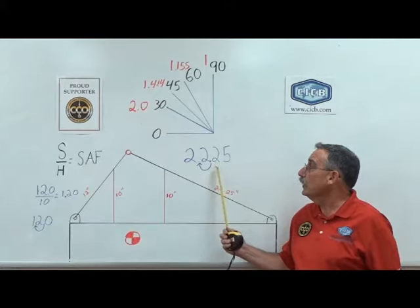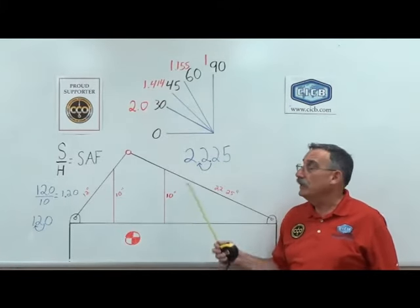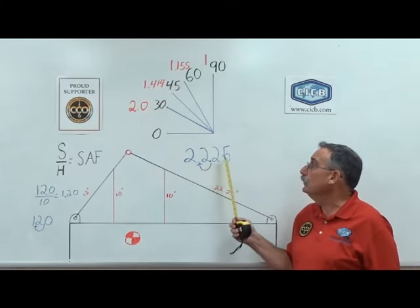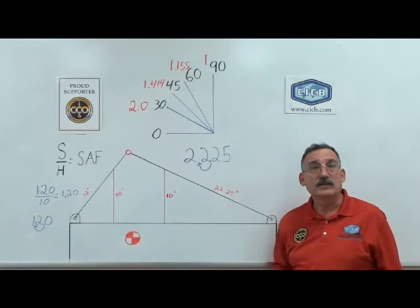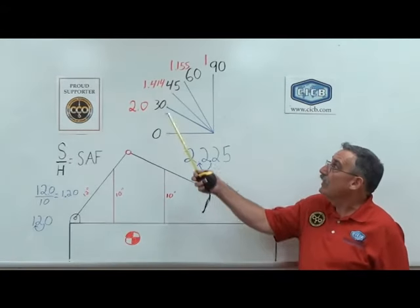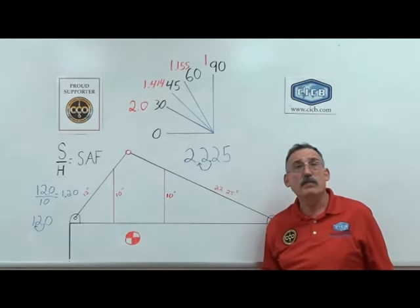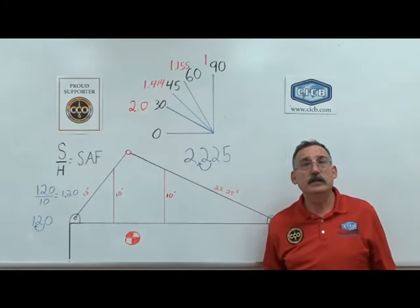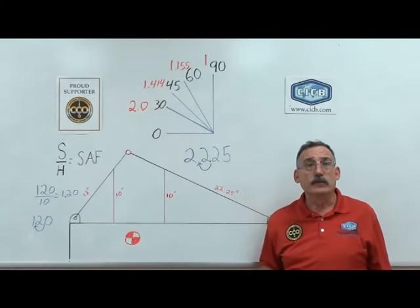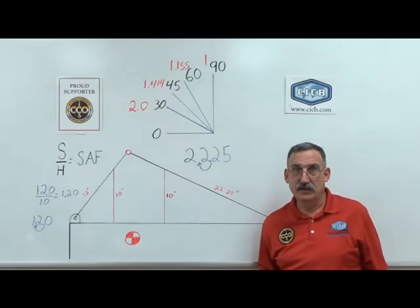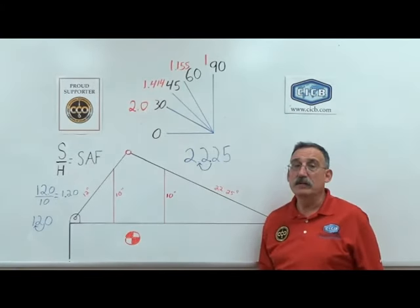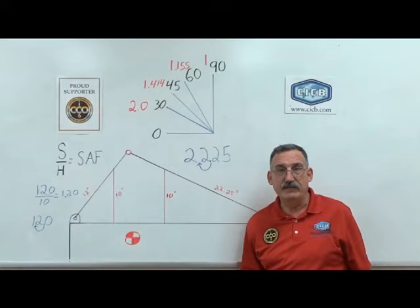When we take that decimal point and move it one spot over, we come up with 2.225 as our sling to load angle factor. That is an angle below a 30 degree angle, and we must re-rig our load per the ANC standards. Give your angle some thought when selecting your slings. Have a great day.